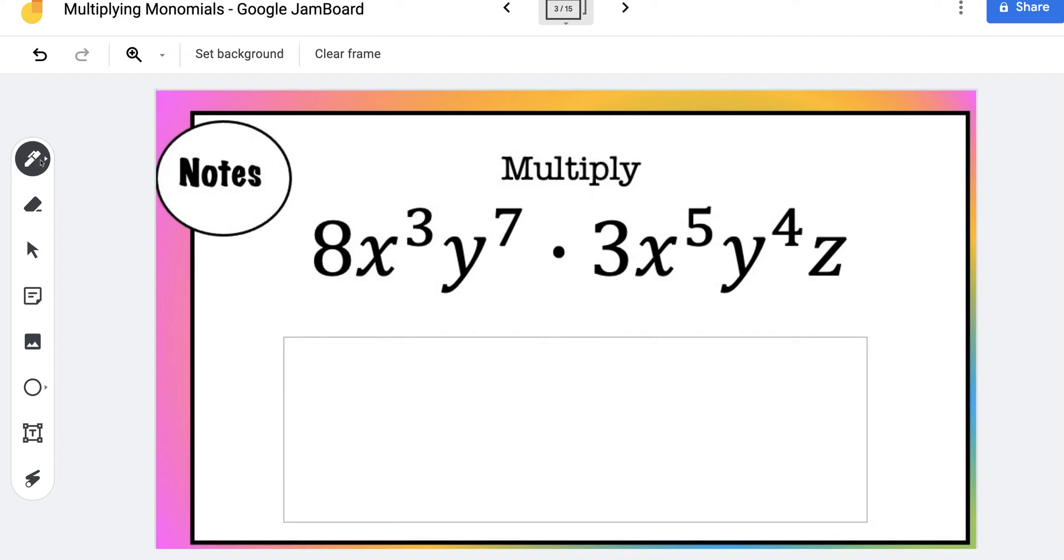So come over here first and grab a color. I'm going to start with blue. And to multiply these two monomials, what you want to do first is multiply the coefficients. So in this case we have the number 8 and the number 3. So 8 times 3 will give us 24.